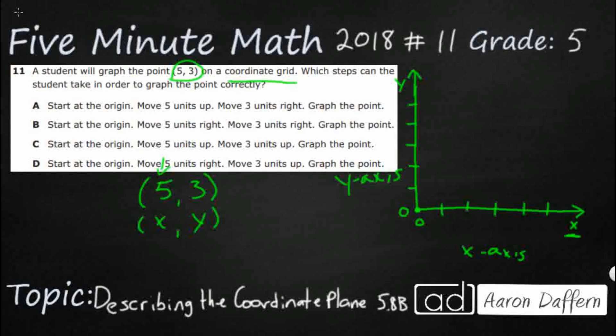You notice all of these options start at the exact same spot, and they label it the origin. We've already labeled it, we just might not have realized it. The origin - and origin means beginning place - is (0, 0). That's where everything begins, where the two axes meet.